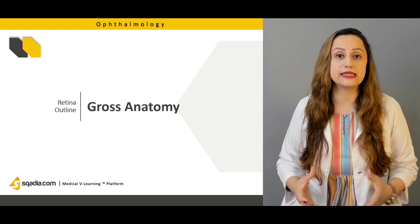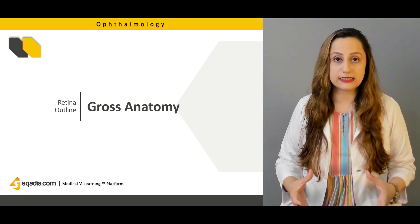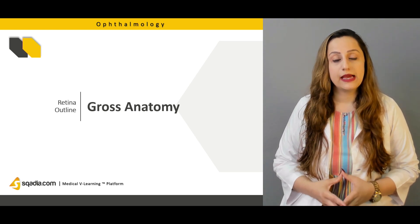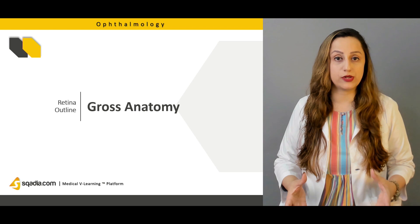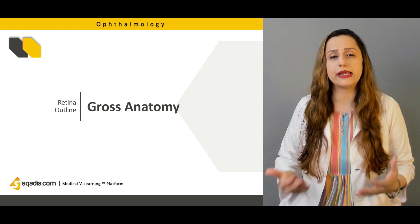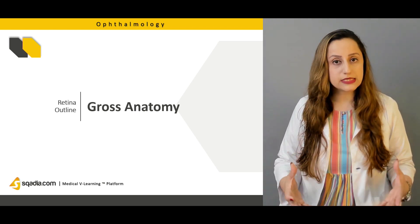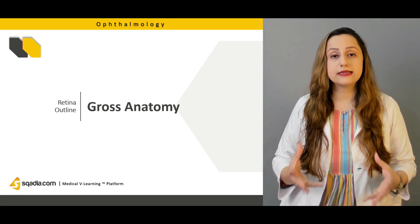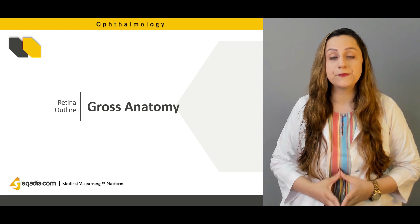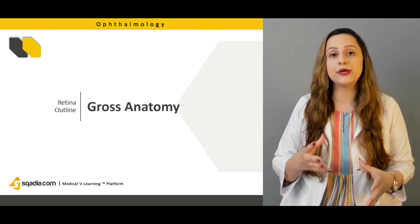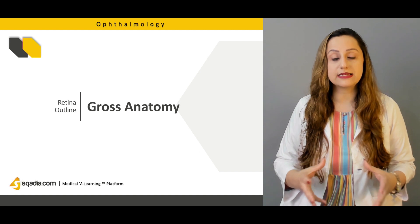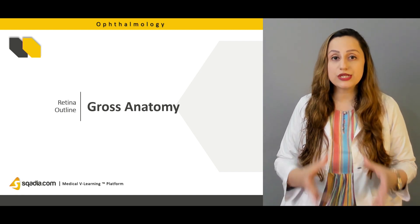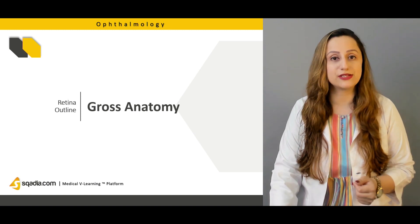Mainly we'll be discussing the optic disc, which is quite visible when looking at the retina, and on the other hand we have the macula. Any abnormalities related to the optic disc and maculopathies — diseases peculiar to the macula — will be discussed, giving you the interesting details of the gross anatomy of retinal structures.